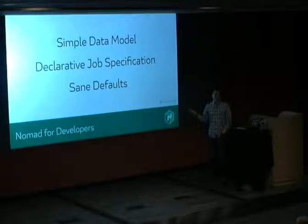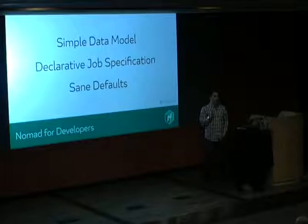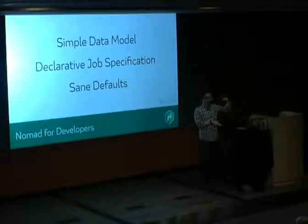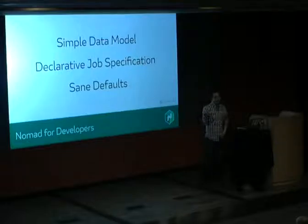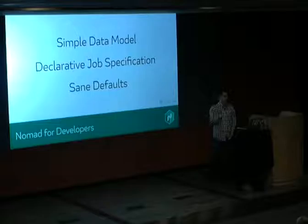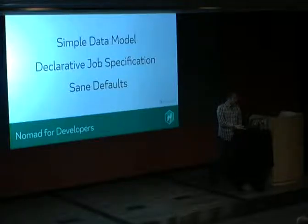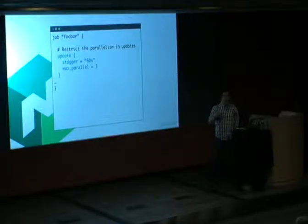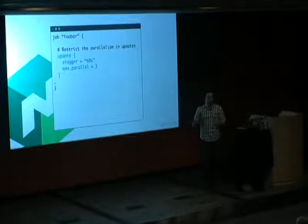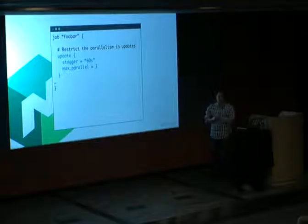To make Nomad easy for developers, we gave it a simple data model — just jobs, task groups, and tasks. There's a declarative job specification so you don't need to worry about how things get running. And there are sane defaults — you don't need to specify data centers; it defaults to all of them in the default region. You don't need to configure resources upfront, so it's easy to get started.